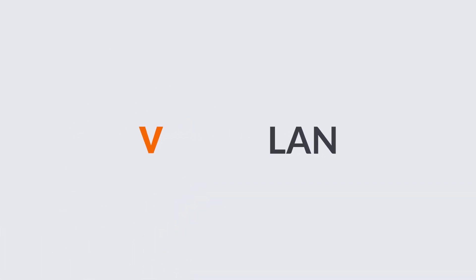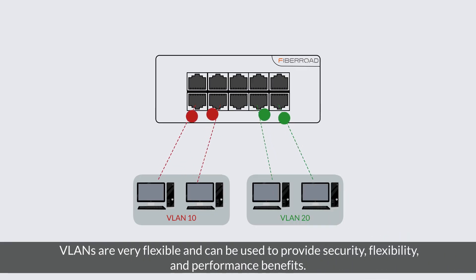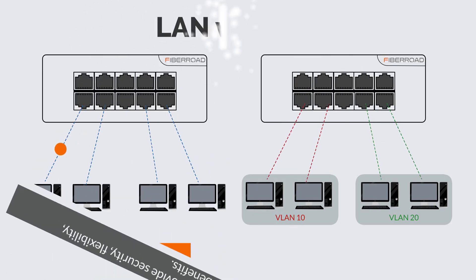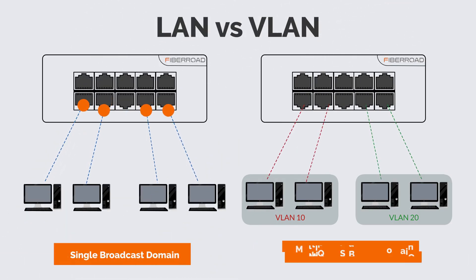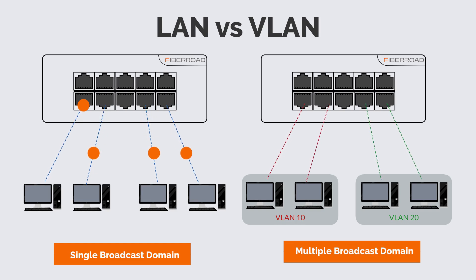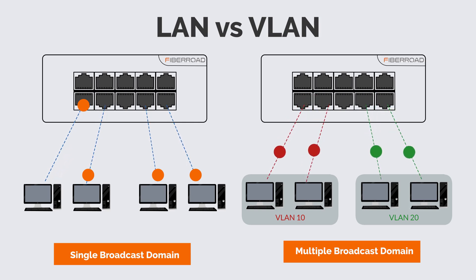A VLAN is a virtual LAN that allows you to logically segment your network without the need for physical segmentation. The main difference between LAN and VLAN is that LAN works on a single broadcast domain, while VLAN works on multiple broadcast domains. In a Local Area Network, the packet is advertised to each device, while in a Virtual Local Area Network, the packet is sent to a specific broadcast domain.